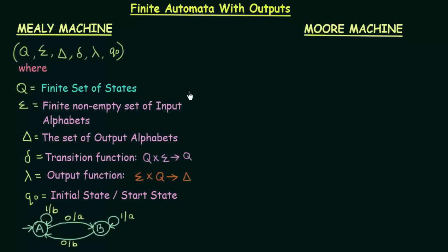The Mealy machine is defined using six tuples: Q, Sigma, Delta, Del, Lambda, and Q naught. Q is the finite set of states — same as our DFA. Sigma is the finite non-empty set of input alphabets, also same as before. Delta is the set of output alphabets — this is a new addition since we are now discussing finite automata with outputs. Del is the transition function that maps Q cross Sigma to Q, same as in DFAs.